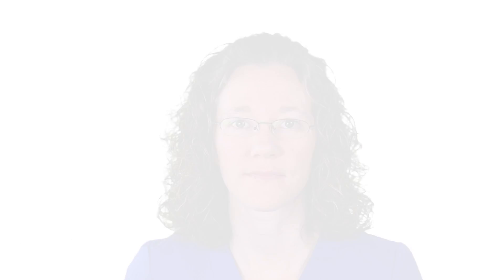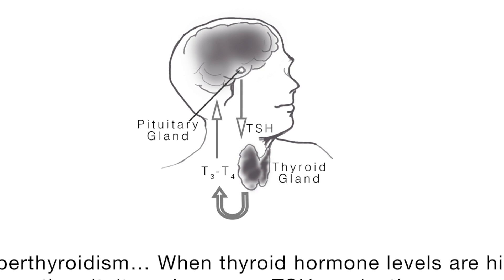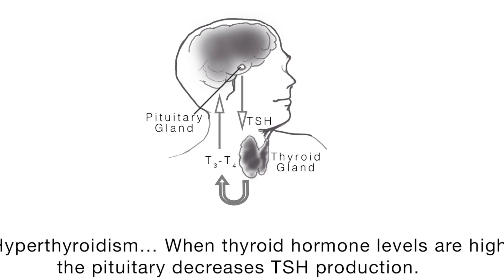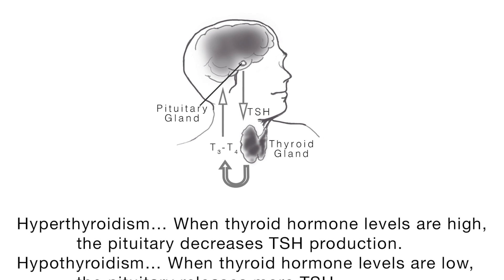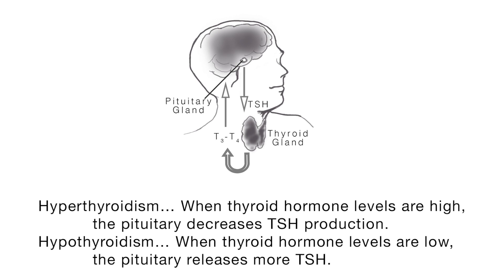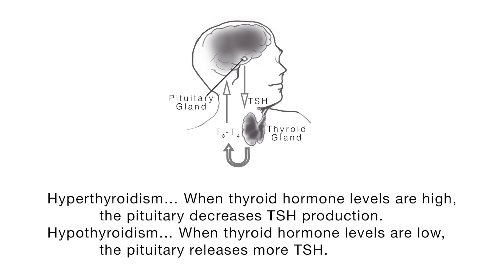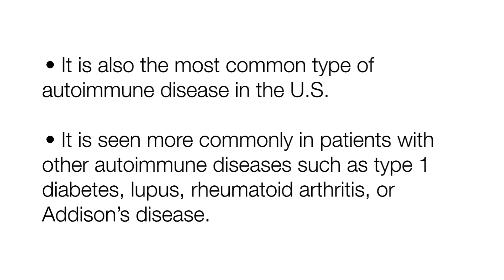Hyperthyroidism refers to elevated serum thyroid hormone levels. When thyroid hormone levels are high, the pituitary decreases thyroid stimulating hormone, or TSH, production. Hyperthyroidism may be due to several causes. Graves' disease is the most common cause, accounting for more than 60% of all cases, and is also the most common type of autoimmune disease in the United States.